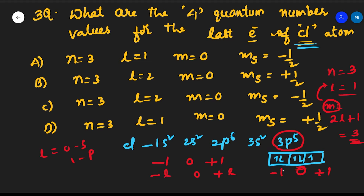For 3p⁵, m = 0. The last electron in 3p⁵ has ms = −½, because the orbital already has a +½ electron paired and this is the spin-down electron. So option A is correct: n=3, l=1, m=0, ms=−½. This is how we find quantum numbers for any electron in competitive exams.